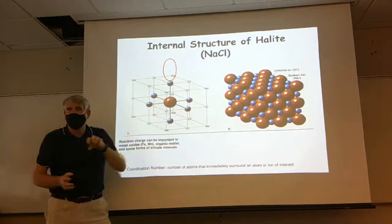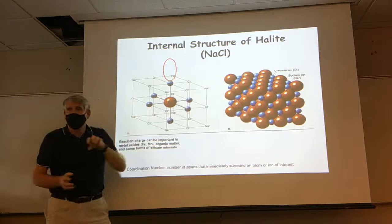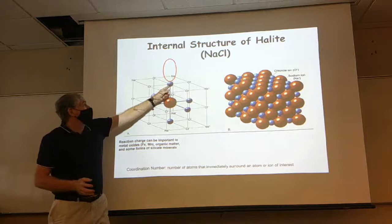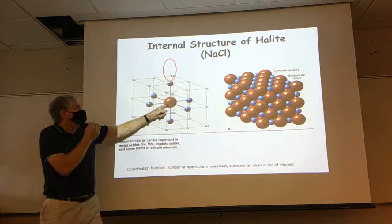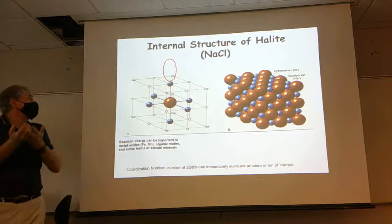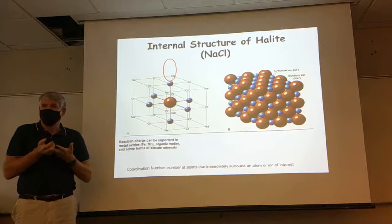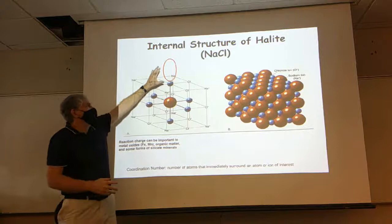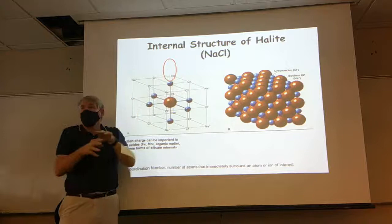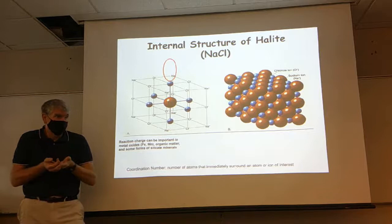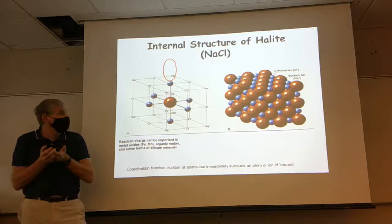On the edges of this crystal, we're missing one — this atom is only associated with five instead of six. At the edge of that crystal it should be bound to another chlorine, but it's not there, so that gives it a charge. On the edges, because it's not fully coordinated — not bound by all the atoms it should be — we have an electrical charge on that mineral surface. That's an adsorption site.